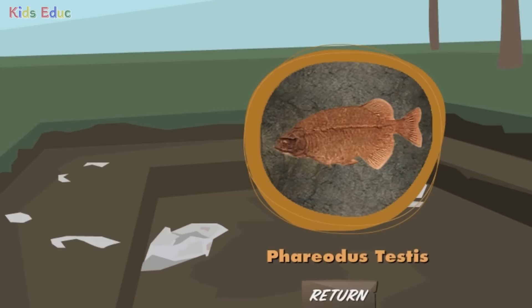Fariotus testis. This is a fossil of a fish called Fariotus testis. This fish lived 50 million years ago and is known for its large teeth and its huge appetite. This is a really good specimen — you can see that a lot of the fish was preserved. This rarely happens.